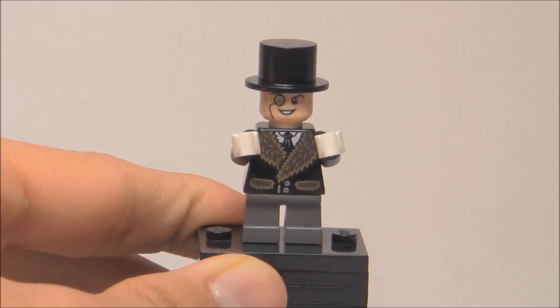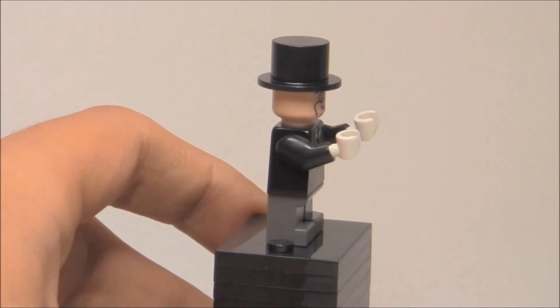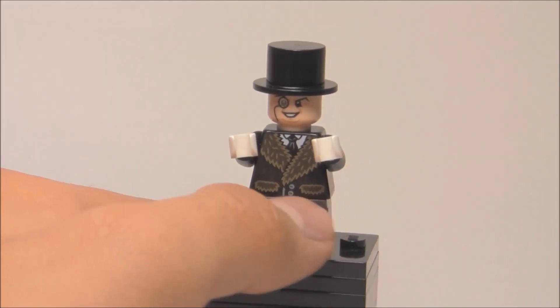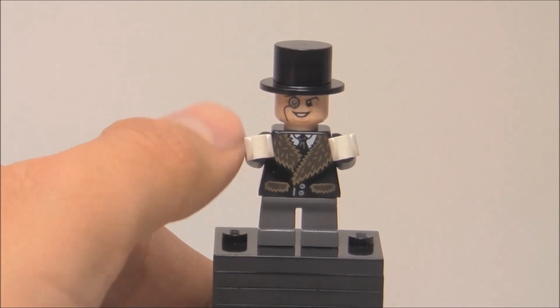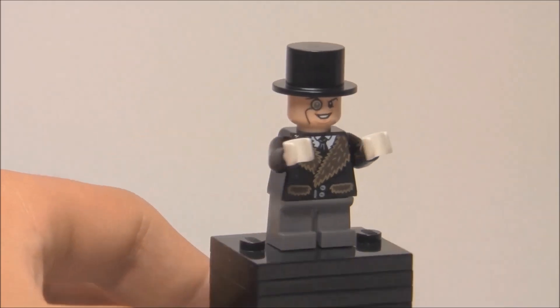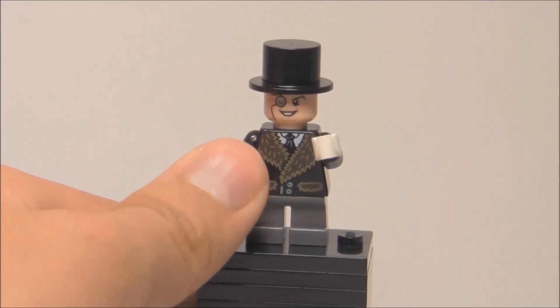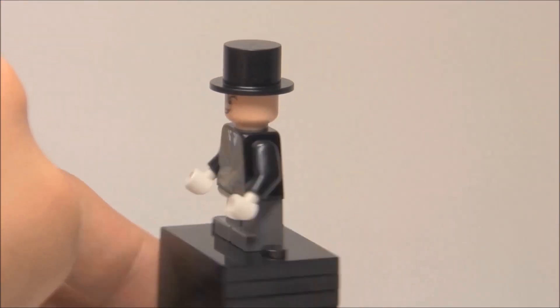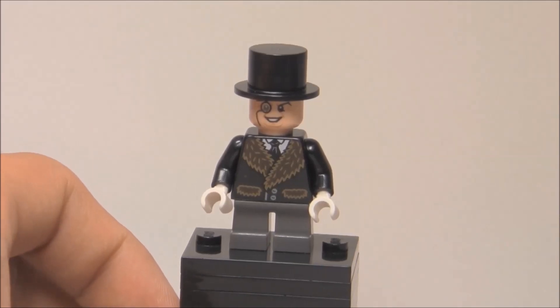The minifigure is very well-made. He's different than the Arkham Asylum version because this one has this fur coat, printed on the torso and back which looks great. He has these small legs in dark grey, which are quite rare. This is the cheapest way to get them. His face is the same as the Arkham Asylum printing, which is cool since I missed that set. His top hat is just a regular top hat. Overall they really nailed this minifigure. Both minifigures in this set are excellent.